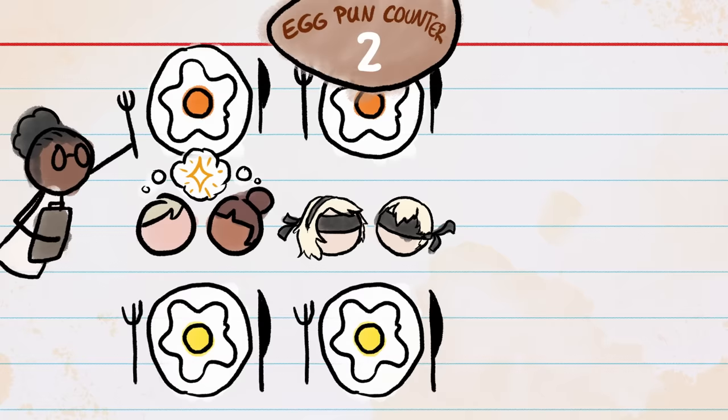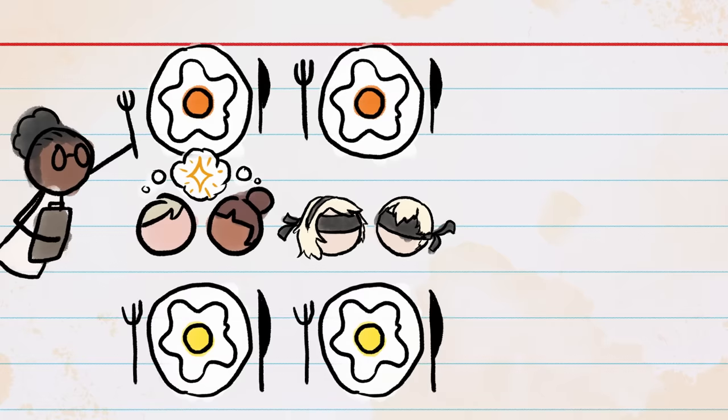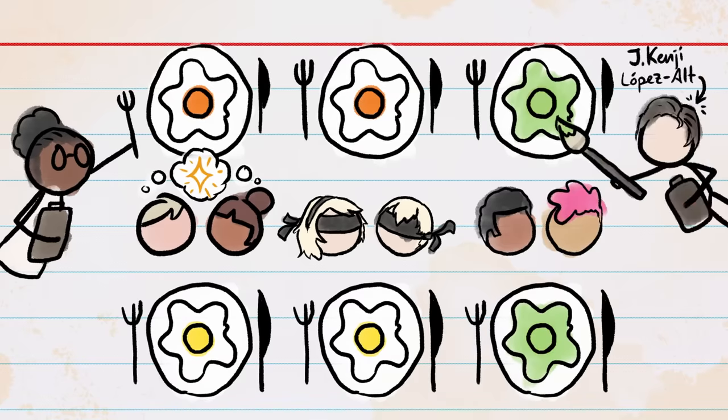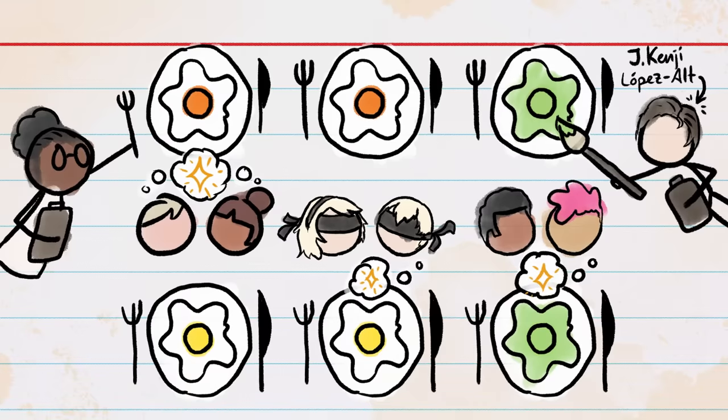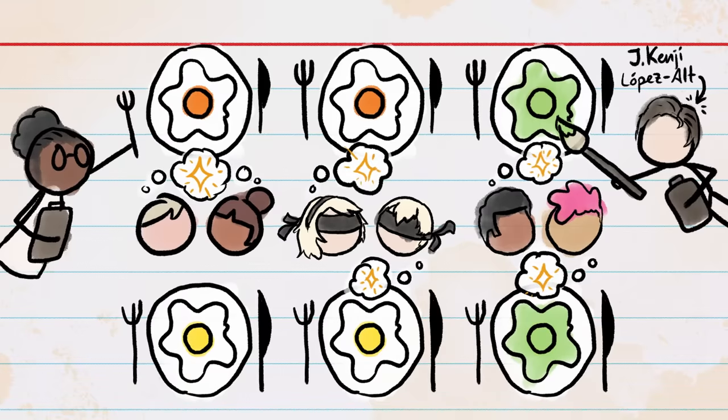But when the egg-speriment is repeated with the tasters blindfolded, or with the eggs dyed green, as food guru Kenji Lopez-Alt did, people choose the paler-yolked eggs as tastier just as often as the darker-yolked ones.